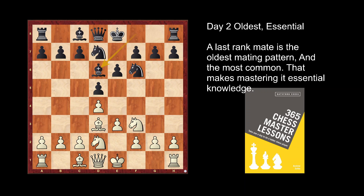When your opponent tries to play symmetrically, usually white is the one to break the symmetry and will find a good time to do it. Right now white tries to break it immediately with a pawn push, trying to exchange.